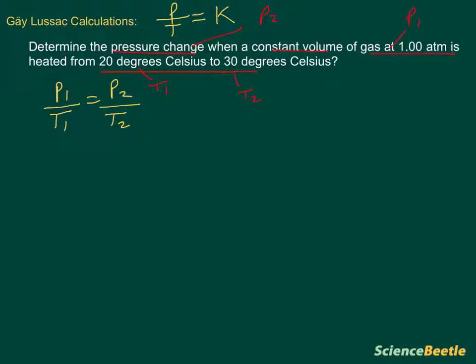So let's go ahead and do that now. I'm going to plug in our P1, which is one atmosphere, divided by our T1, in this case 20 degrees Celsius. We're going to need to convert this to Kelvin here pretty soon. This is going to equal our P2, the value we're looking for, divided by the second temperature, which is 30 degrees Celsius.